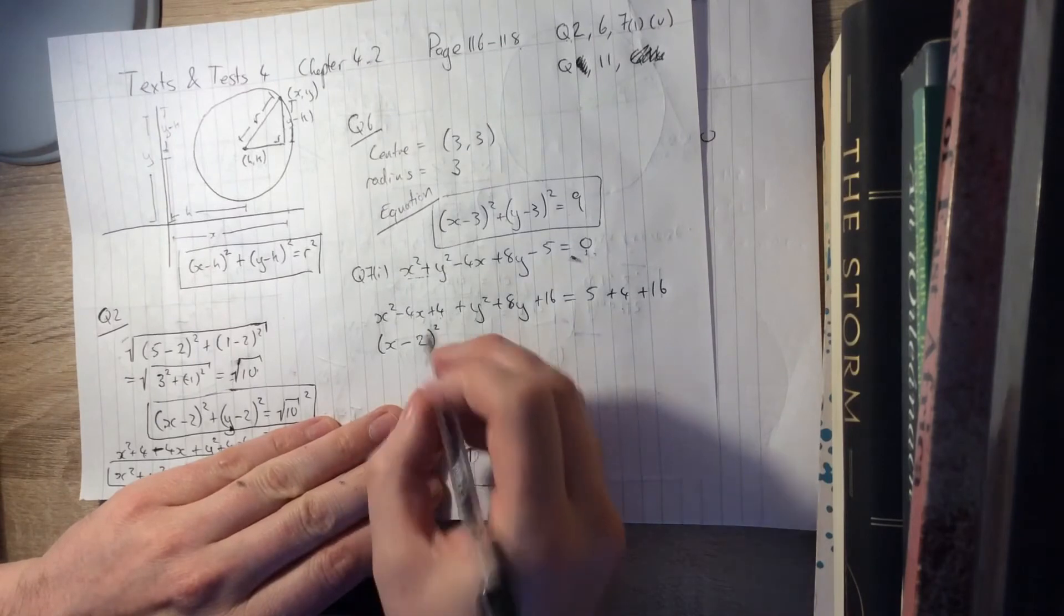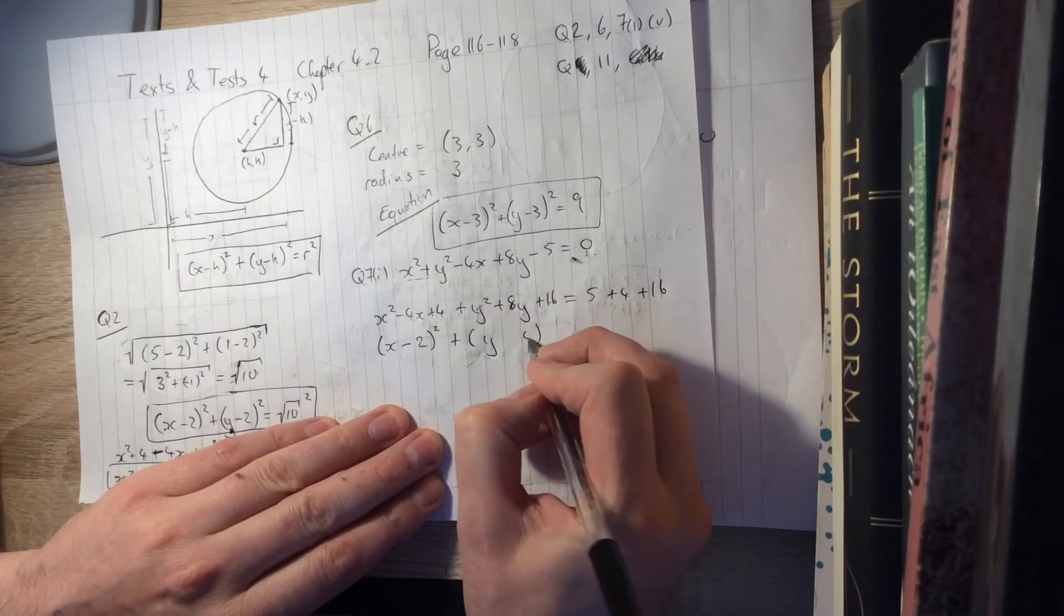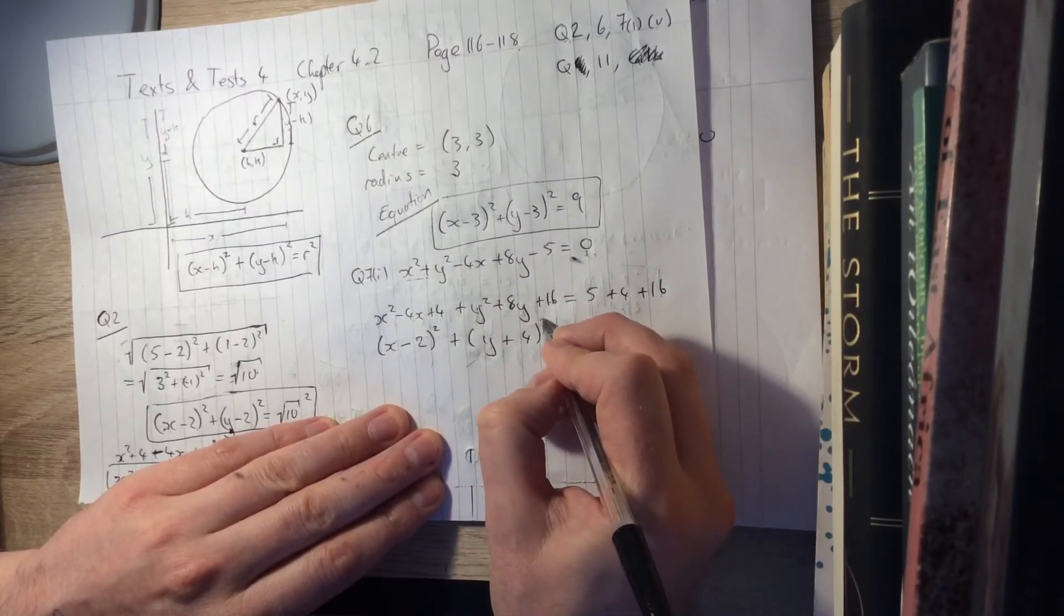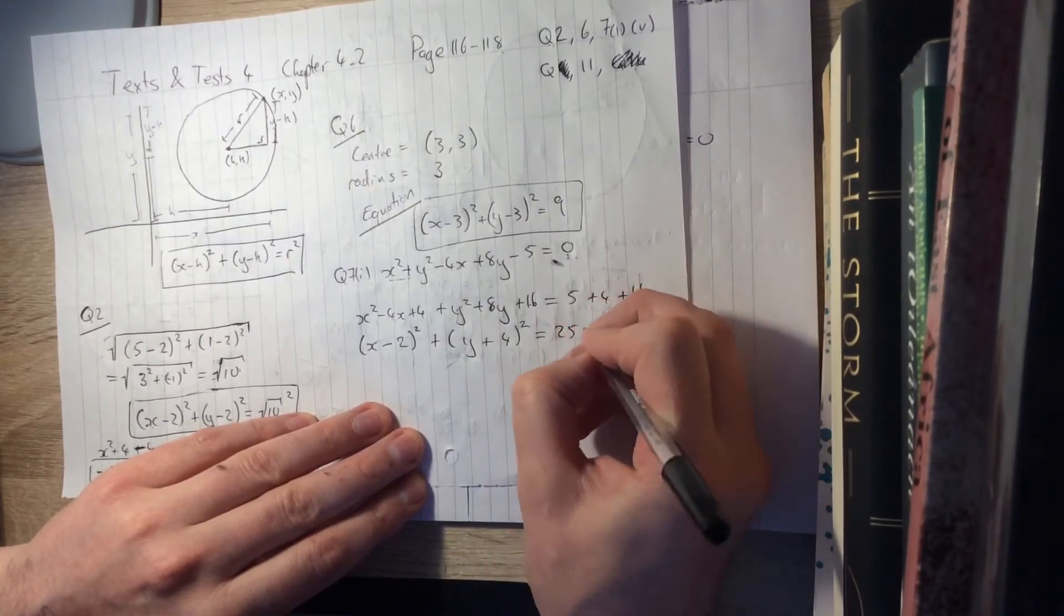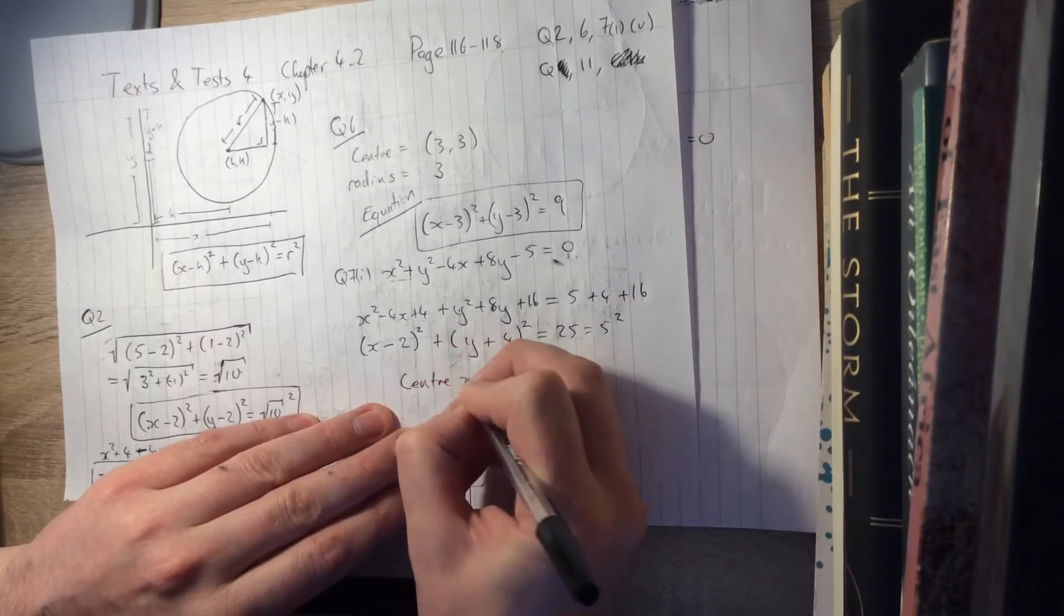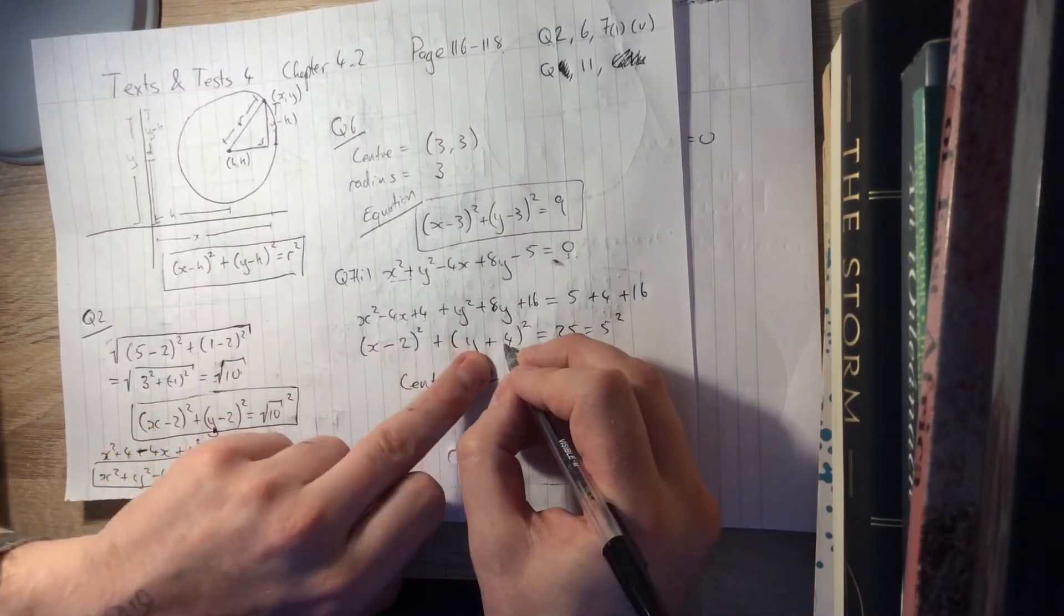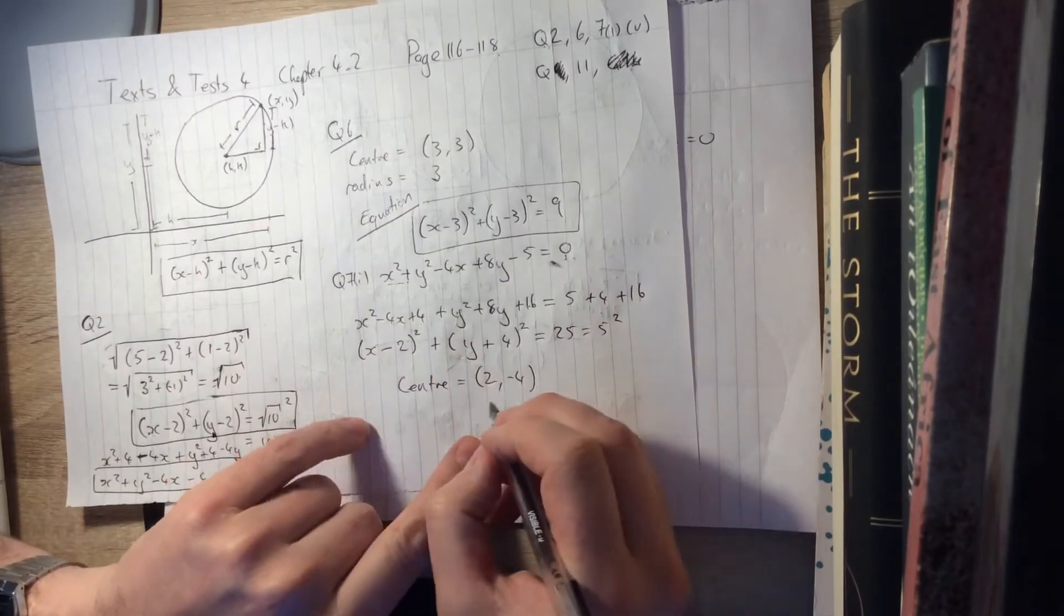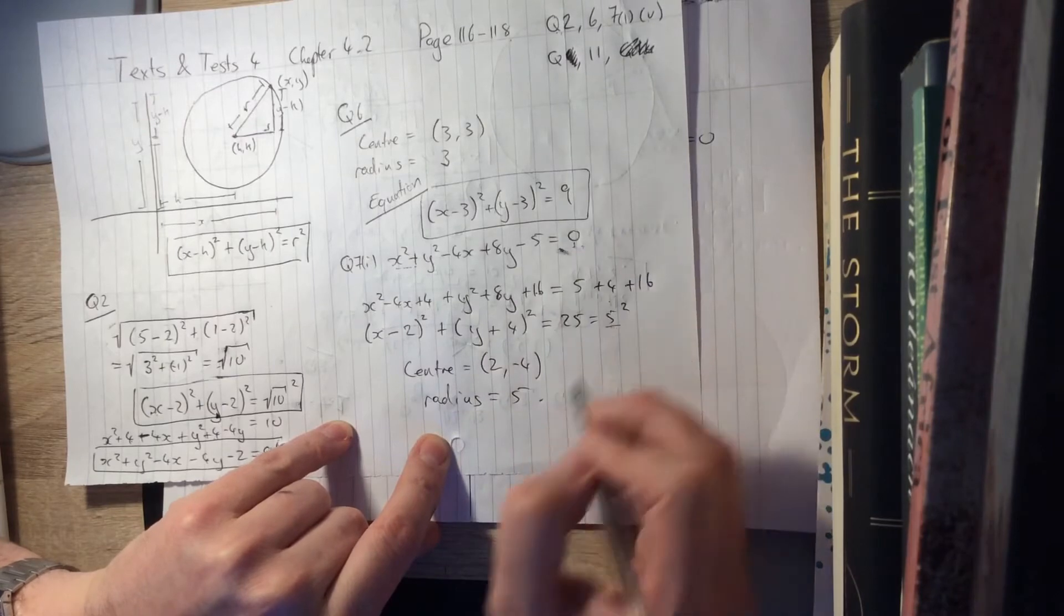And what I get is x minus 2 squared plus, this is square the first, square the second, the second had to be 4, twice the product is 8y, equals 25, which is 5 squared. So our center is going to be at, well, it's x minus the center coordinate, so that's 2, and y minus the center coordinate, so it's minus 4. So there's our center, our radius is 5, because it was 5 squared.